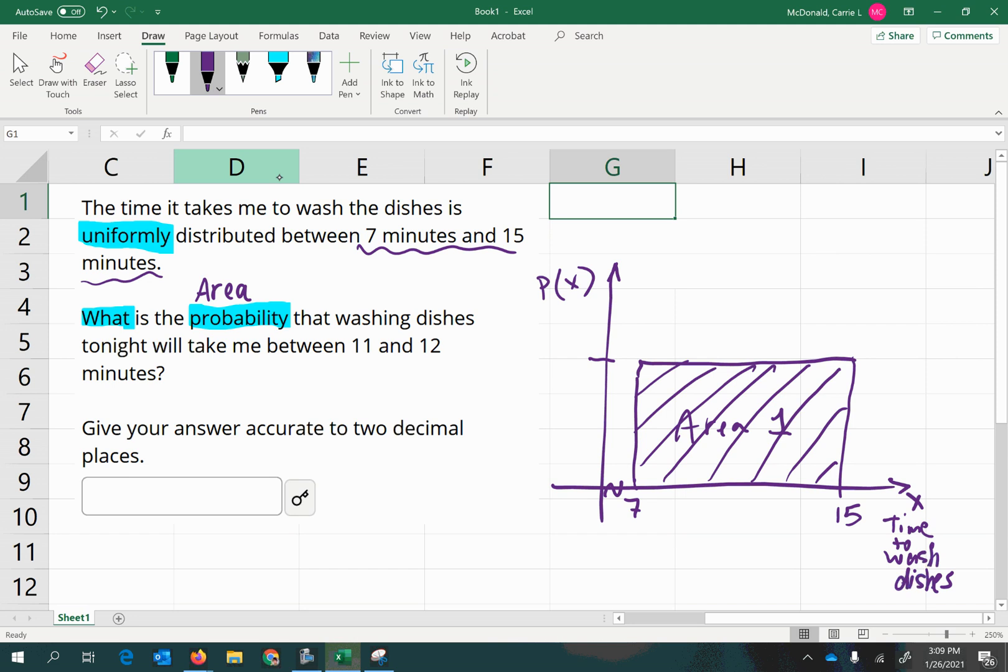Because if the range down here is, let's see, 15 minus 7, 8 units. And I need this rectangle to have an area of 1. And you remember, area on a rectangle is base times height. Well, the only thing that I'm going to multiply 8 times to get 1 is its reciprocal 1 eighth. So that's the probability height.